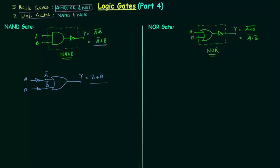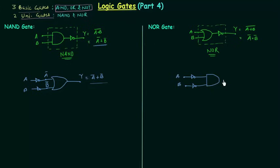Like NAND gate, we also have another way to represent NOR gate. We will use one AND gate and first complement the inputs. So inputs A and B become A complement and B complement, and the output Y is equal to A complement AND B complement, which is the same result.